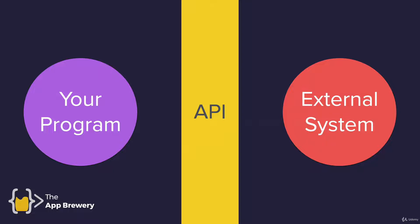What you're trying to do is use the rules that the API has prescribed to make a request to the external system for some piece of data.